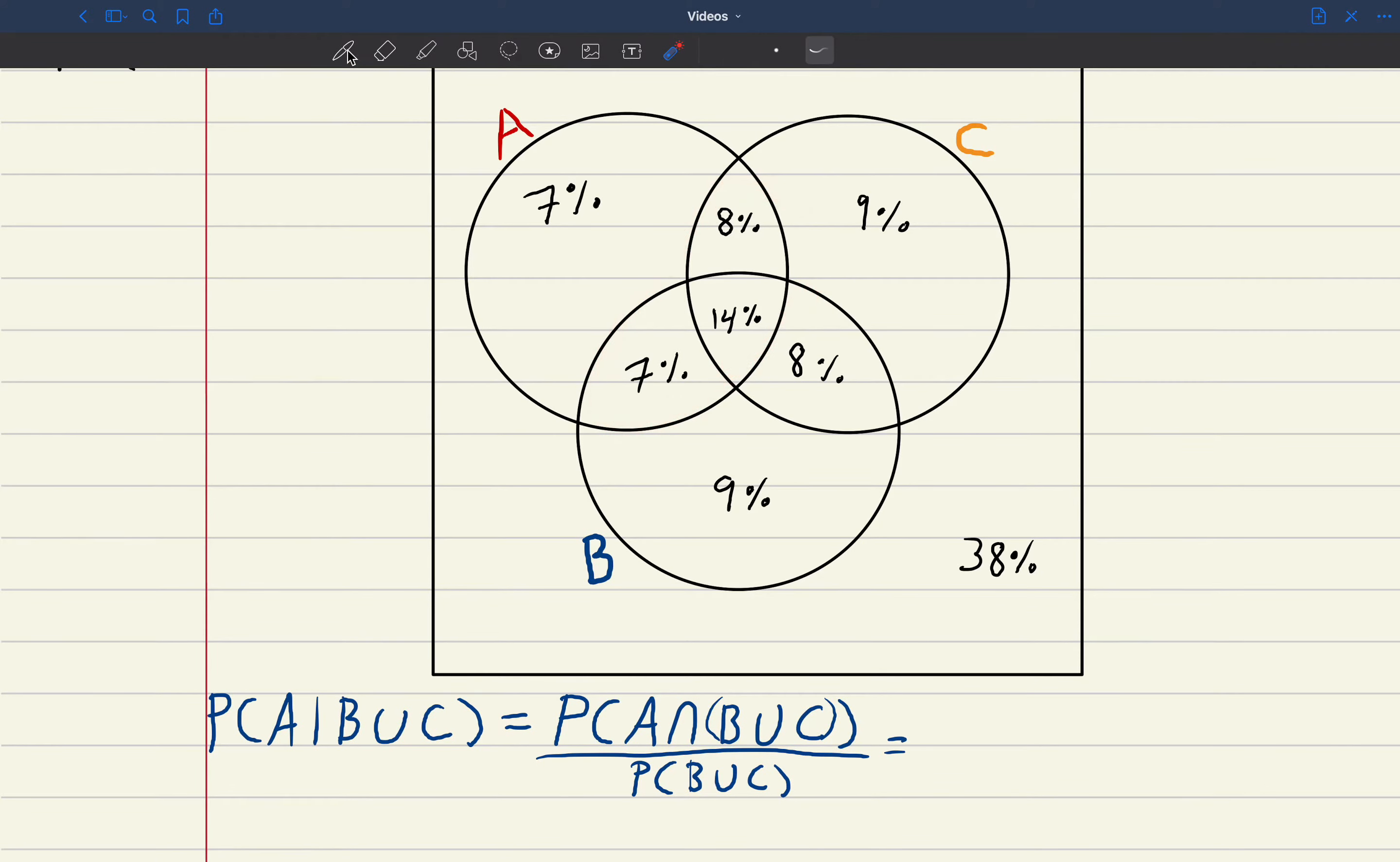So that's the part that we need to add up. So that would be 7% plus 14% plus 8%. And that's 7 and 14 makes 21 plus 8 makes 29. So that's 29% up top.